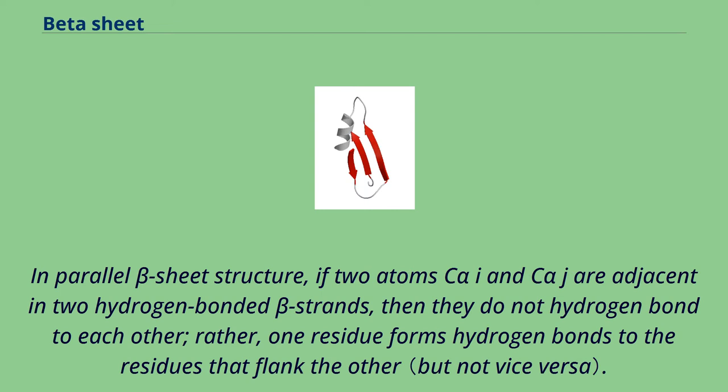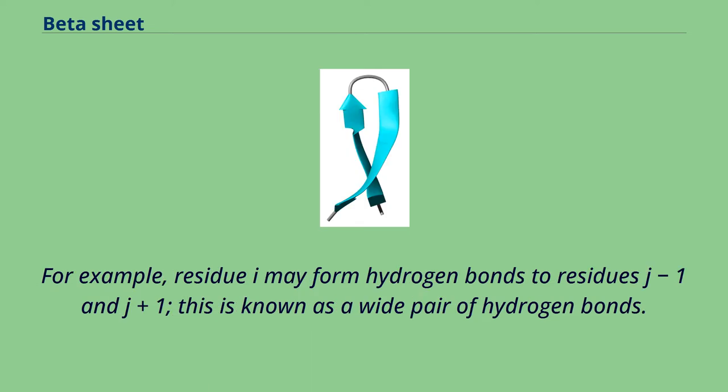In parallel beta sheet structure, if two atoms C-alpha i and C-alpha j are adjacent in two hydrogen-bonded beta strands, then they do not hydrogen bond to each other. Rather, one residue forms hydrogen bonds to the residues that flank the other. For example, residue i may form hydrogen bonds to residues j minus 1 and j plus 1. This is known as a wide pair of hydrogen bonds.